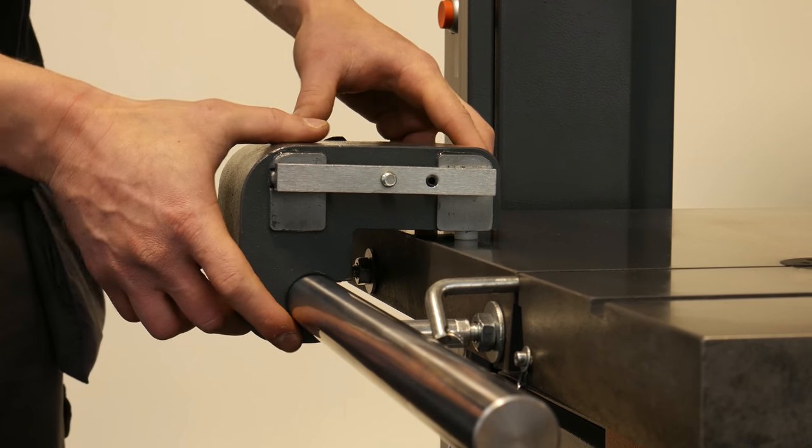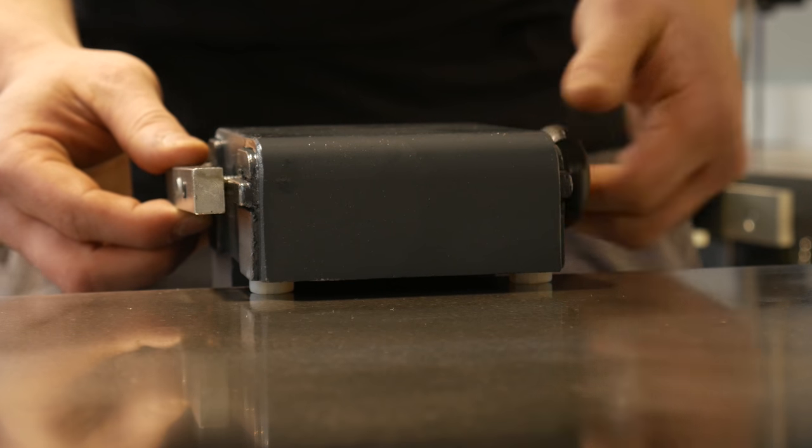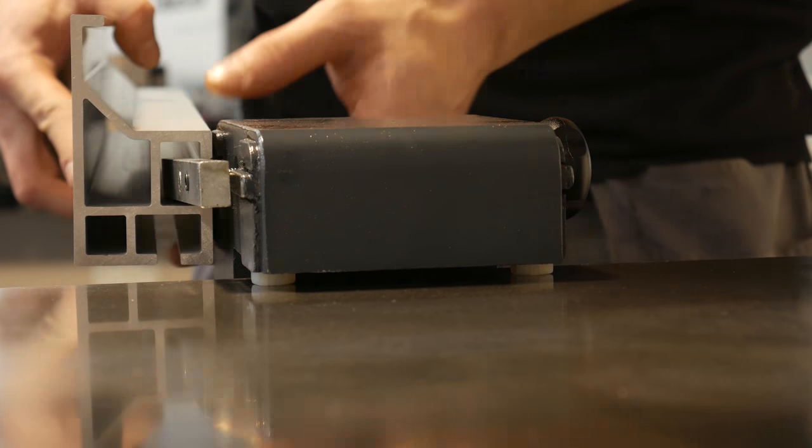Then loosen the thumb screw like so to slide the guide fence onto the track and retighten.